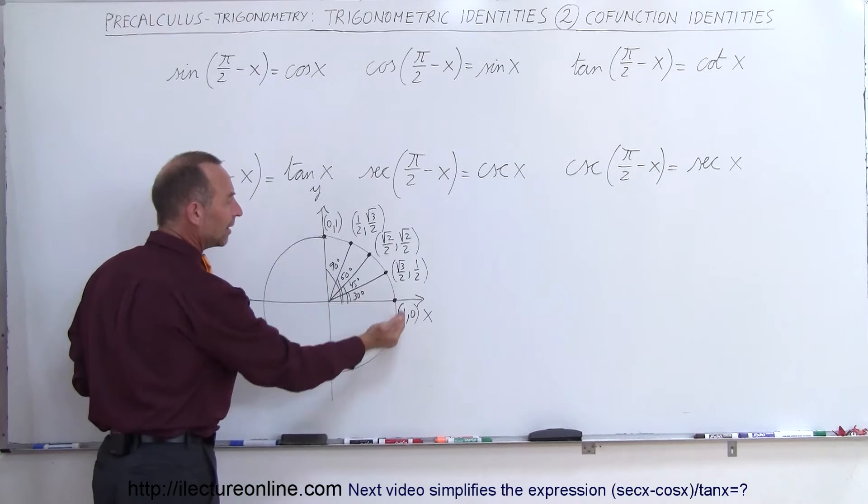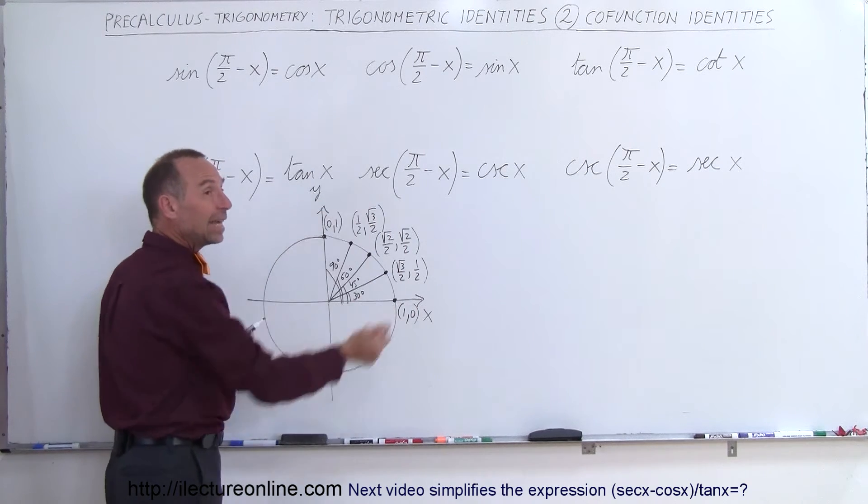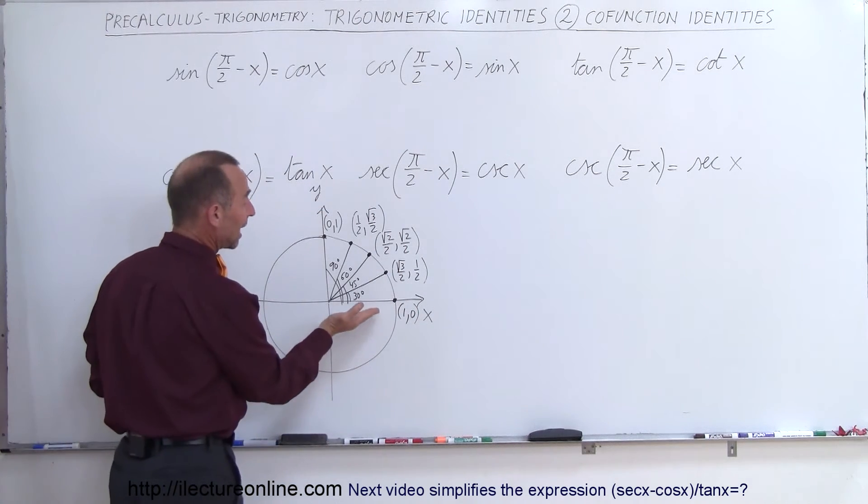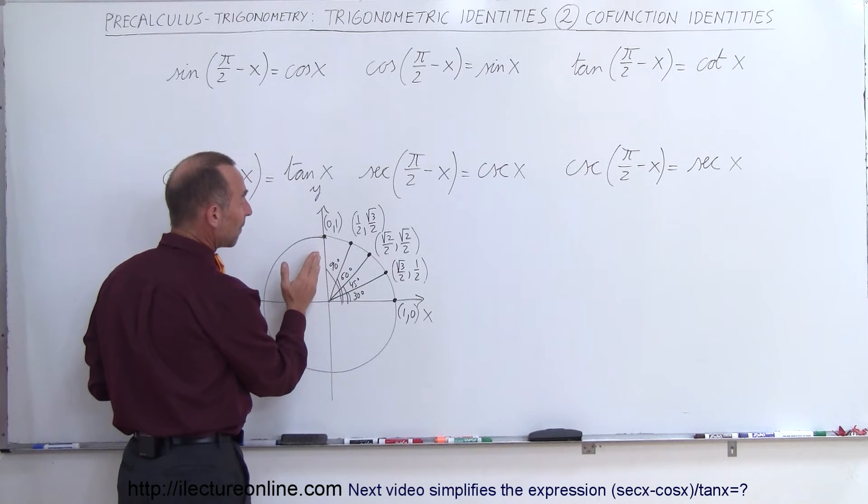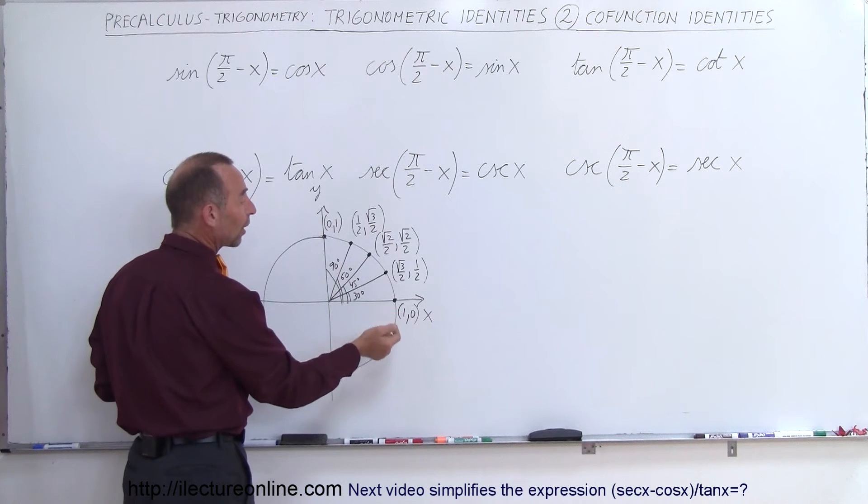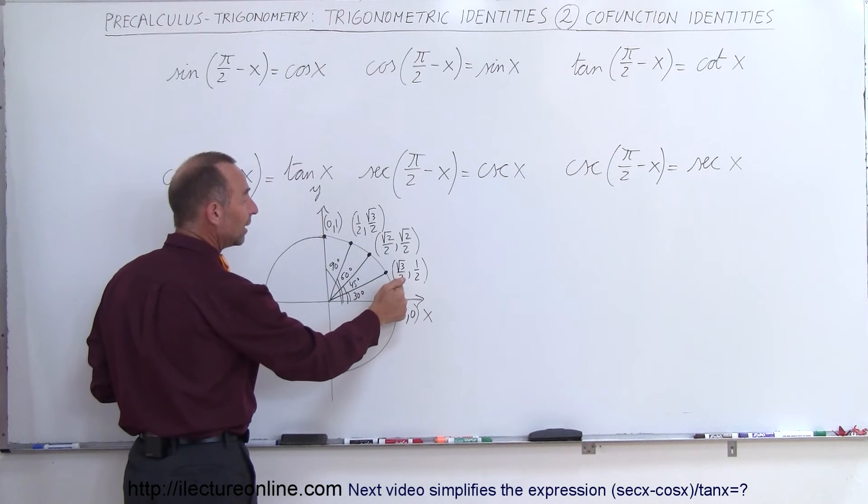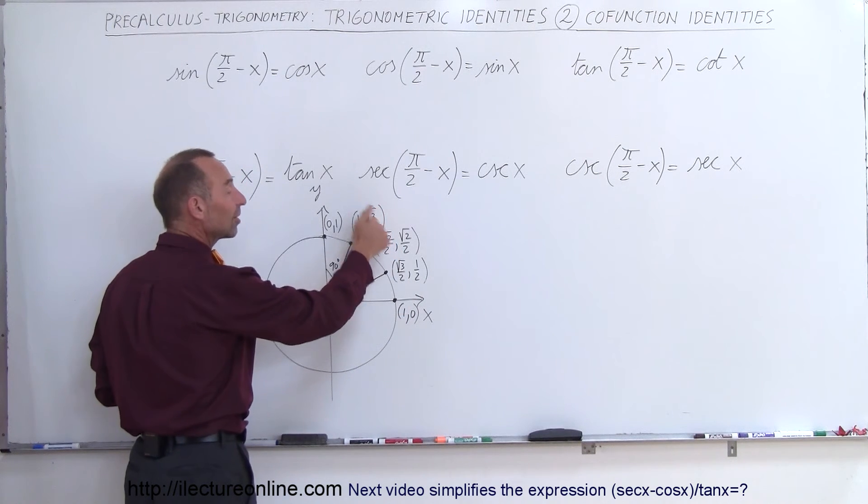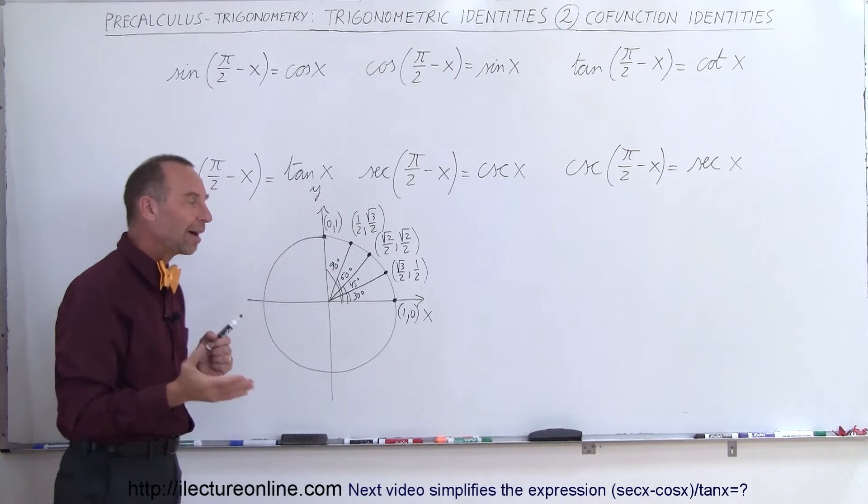Notice that these are the exact same numbers, they're simply in reverse. And so you can say that if you take an angle of 90 degrees minus, let's say, 30 degrees, you get 60 degrees, and that's where the cosine of 30 is the same as the sine of 60. So that's where we have that relationship.